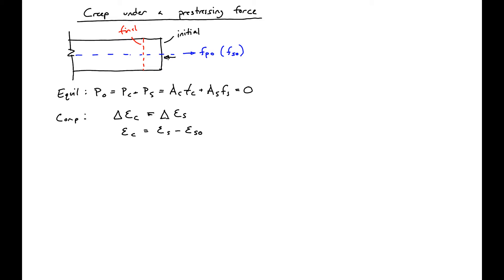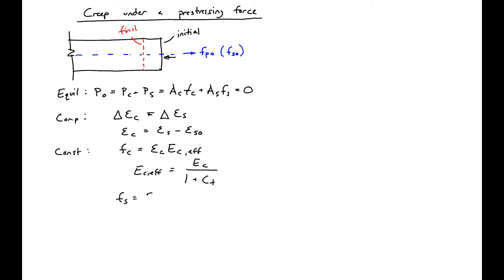Now we'll look at our constitutive relationships. For concrete, FC equals Epsilon C times EC_effective, where EC_effective equals EC over (1 plus the creep coefficient). For steel, FS equals Epsilon S times ES. We'll label these equations 1, 2, 3, 4, and 5.